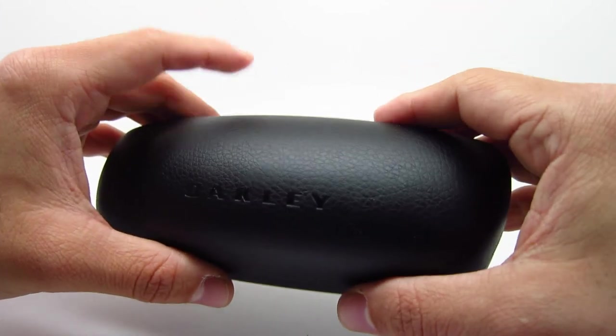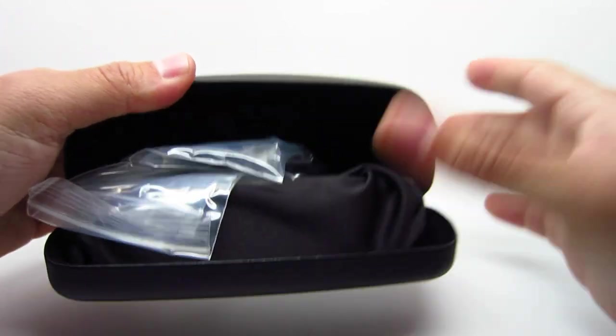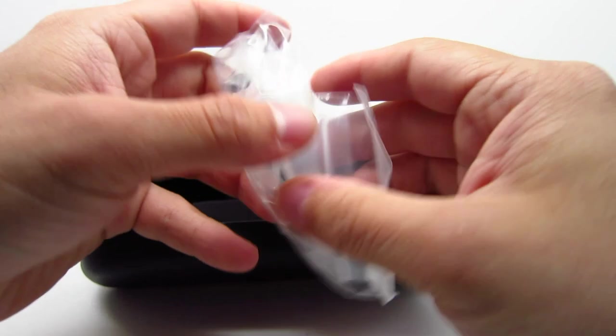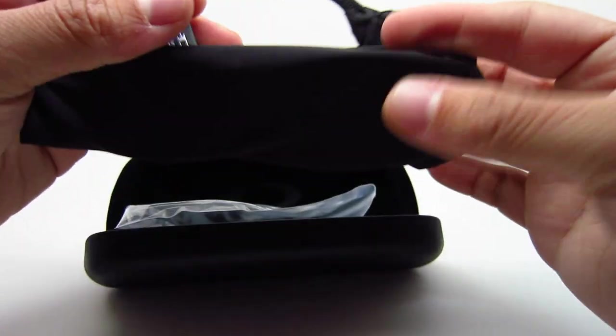All right, on to the next one. Next one I have is the O1 color, which is the satin black. Satin is just matte. Also comes with the same things.